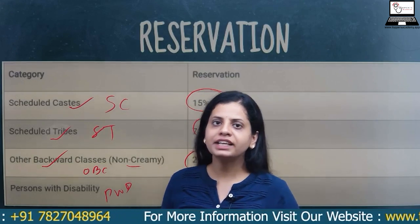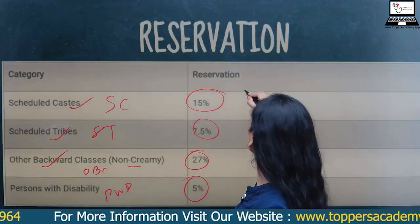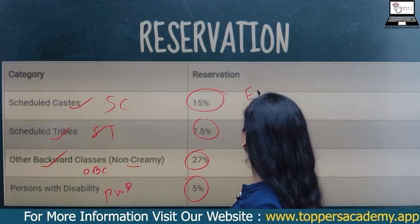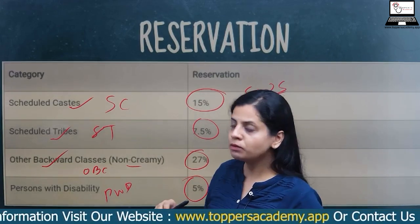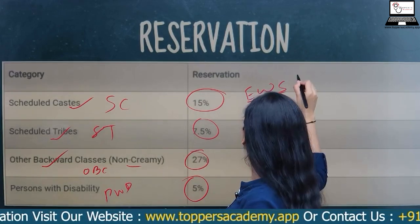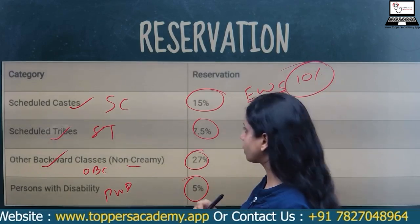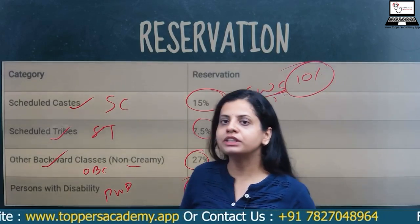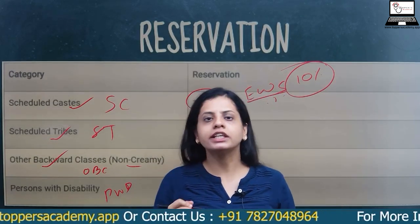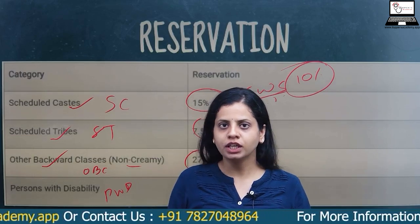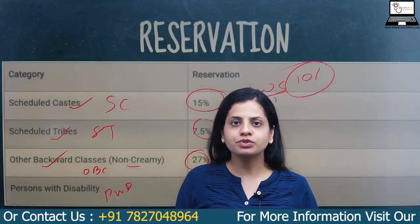Apart from that, the Economically Weaker Section (EWS) group has 10% reservation. So these are the major eligibility criteria and the reservation criteria for your CUET examination.